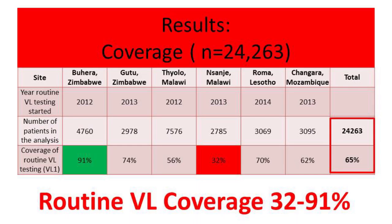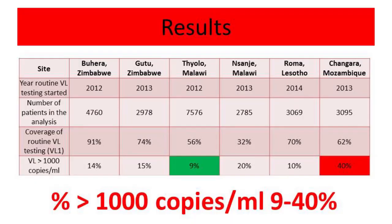From the 24,263 patients analyzed, the overall viral load coverage was 65%, ranging between 32 and 91% across sites. The proportion of patients with viral load above the threshold of 1,000 copies per milliliter was between 10 and 20% at most sites, except Mozambique which had a notably high proportion of around 40%, the reasons for which were not entirely clear.